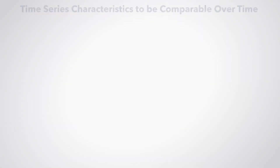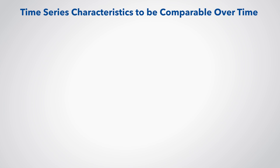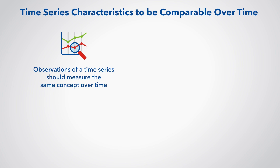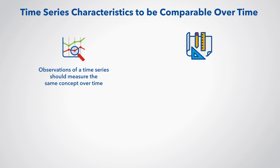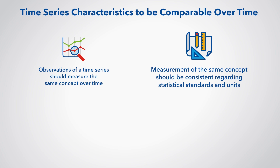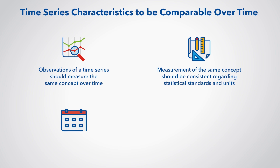Presenting data in a time series format facilitates the identification of underlying trends and turning points. It allows different periods to be compared and the calculation of growth rates. To be comparable over time, the time series should have the following characteristics: observations should measure the same concept over time, consistently with respect to statistical standards and units of measurement, and time periods should be in the same unit, for example months or quarters, since periods of different lengths are not comparable.